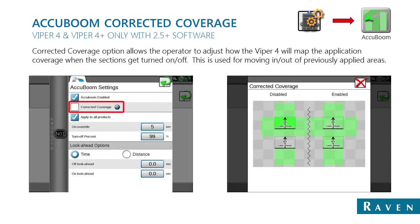New with the Viper 4 in software release 2.5 and beyond is corrective coverage. This was added to keep the painting on-screen accurate during off and on look-ahead times when running into previously applied areas. When AccuBoom is told to shut off, the Viper 4 stops painting immediately, which can show a gap on screen even though one may not physically exist in the field — since boom valves take time to close and deplete. Corrective coverage accounts for this and can be enabled or disabled in the AccuBoom settings.